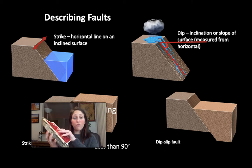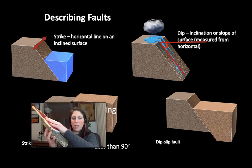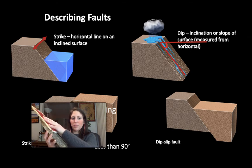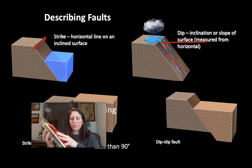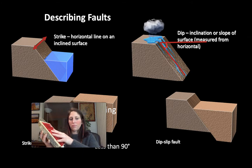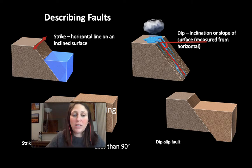If the fault is a dip-slip fault, the rock is going to slip in the direction of dip — either down or up. That's the difference between strike-slip, where movement is left or right along the strike, and dip-slip, where movement is up or down.